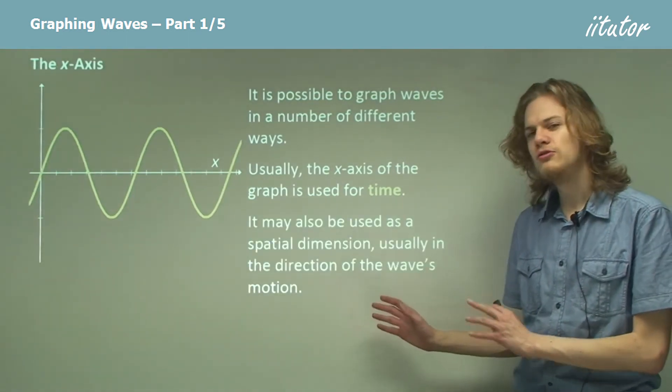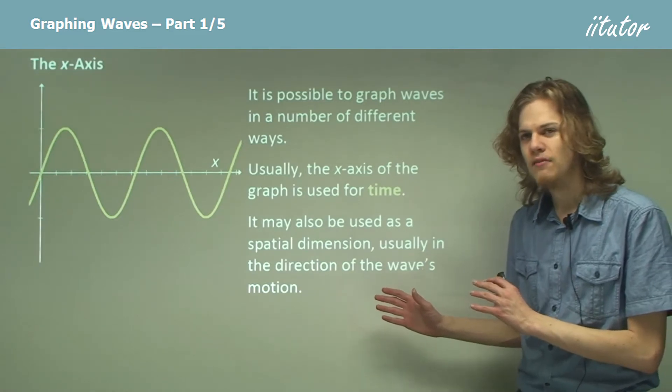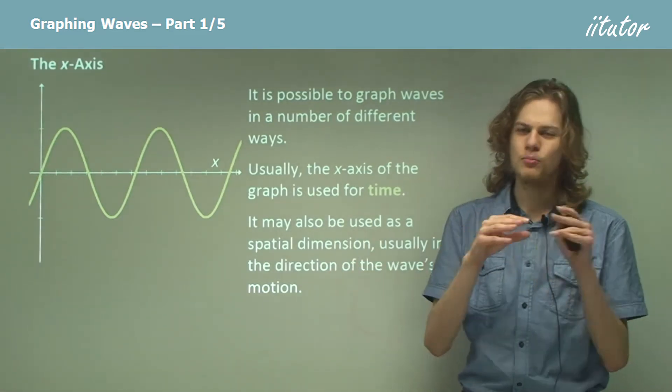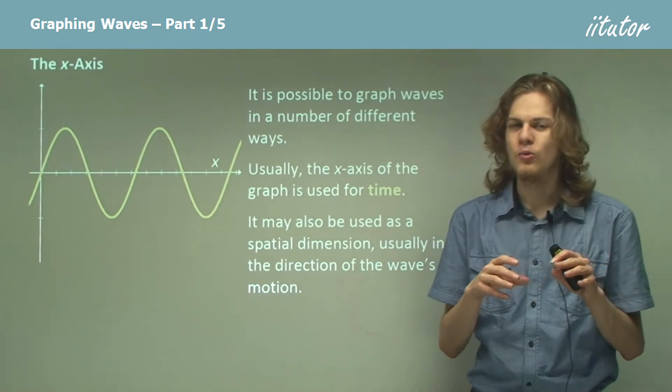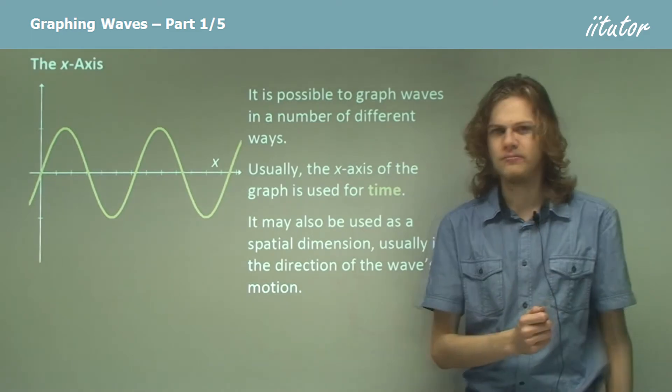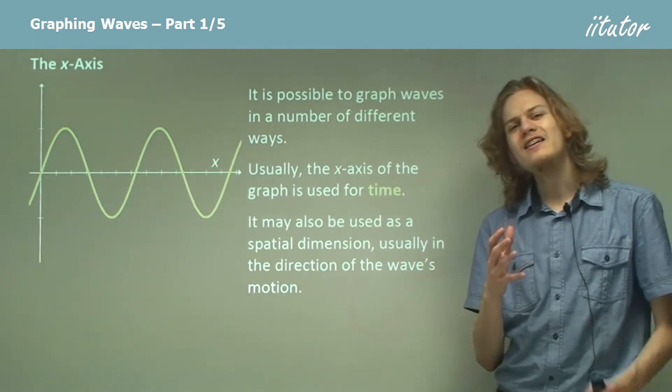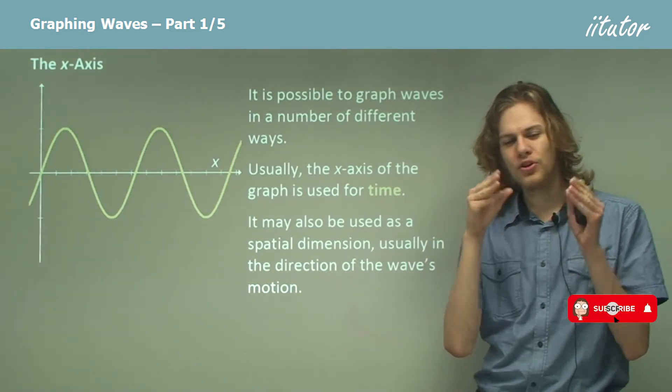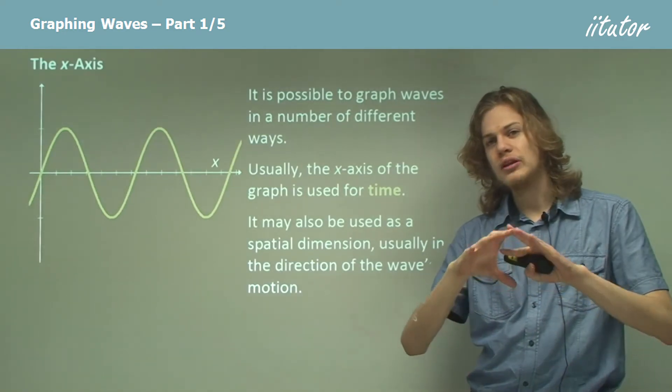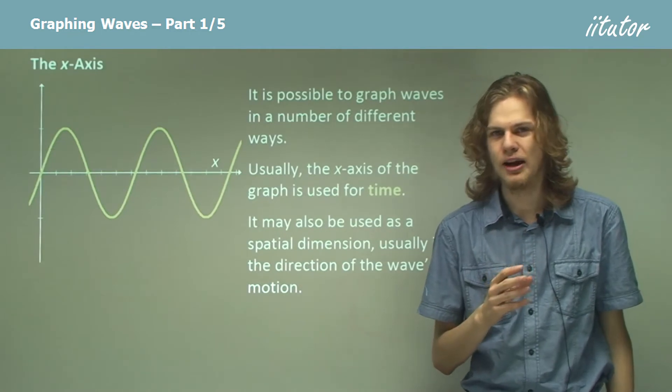So sometimes it's used as a spatial dimension, that is to show what the wave looks like at a fixed point in time, rather than showing how the wave varies at a fixed point in space. So we can either show how a particular part of the wave changes over time, or we can show what the entire wave looks like at a particular point in time.